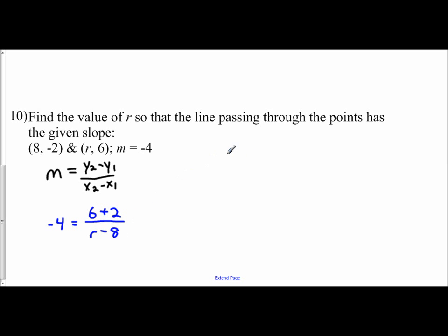So then I'm going to simplify. I'm getting negative 4. 6 plus 2 is 8, so I have 8 over r minus 8. And I'm going to set it up for cross multiplication.